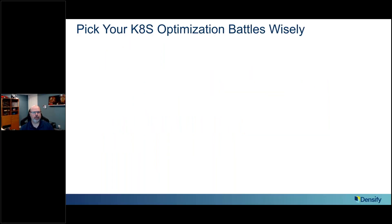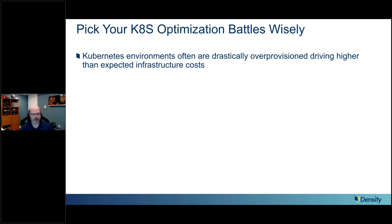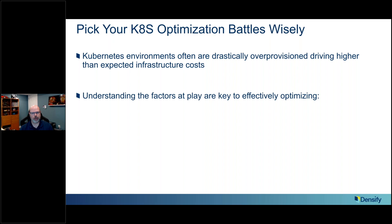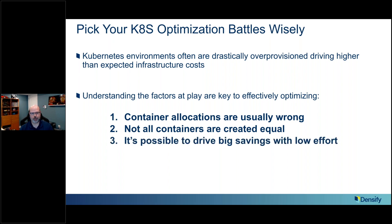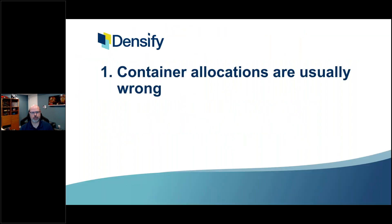What I'm going to talk about is picking your Kubernetes optimization battles wisely. When we as a company have worked with our customers, we've noticed that Kubernetes environments are often drastically over-provisioned, and that over-provisioning drives higher than expected infrastructure costs. As you start thinking about how to optimize such an environment, most are motivated by saving money. I'm going to highlight three factors: container allocations are usually wrong, not all containers are created equal, and it is possible to drive big savings with low effort.